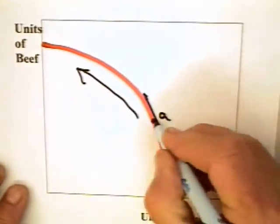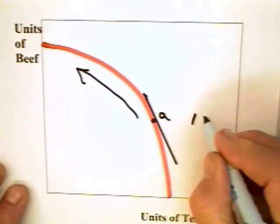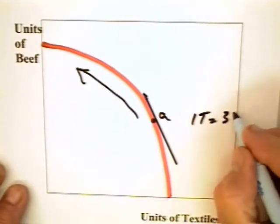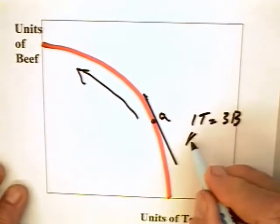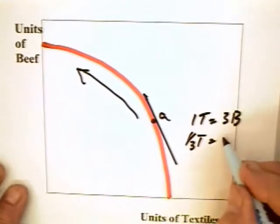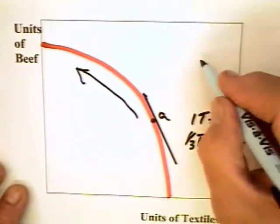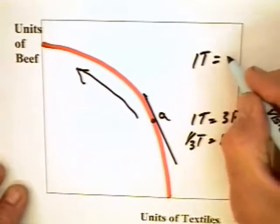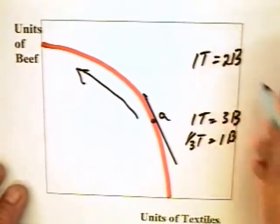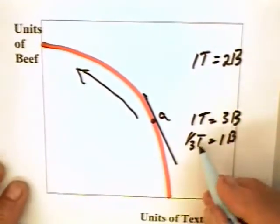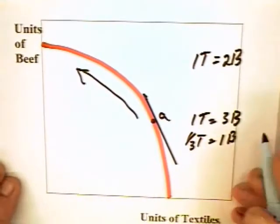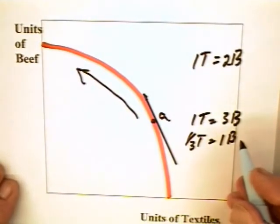And it may be here at A. It has 1T equals 3B, or one-third T for each unit of beef. But it begins to rise, and it begins to rise toward the trade ratio. That is, the United States has to give up more and more textiles for each unit of beef that it produces.